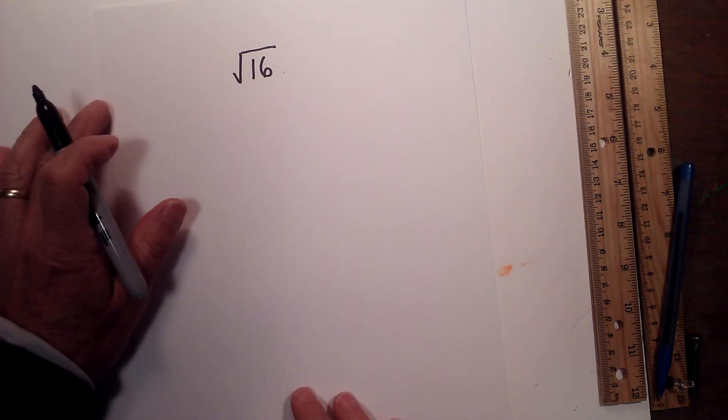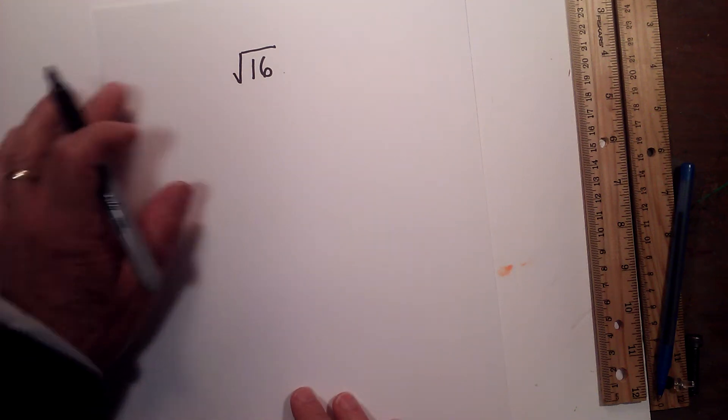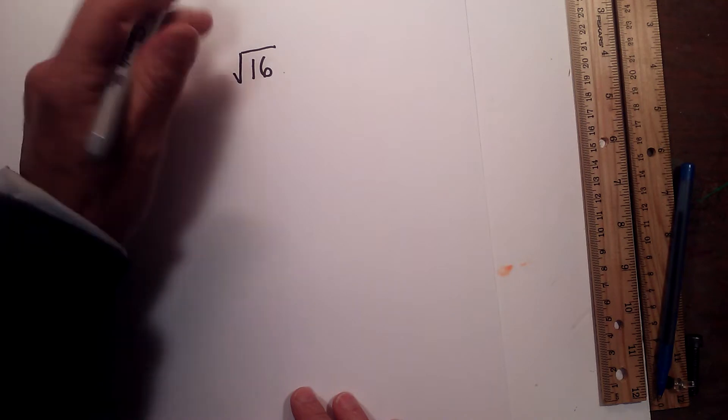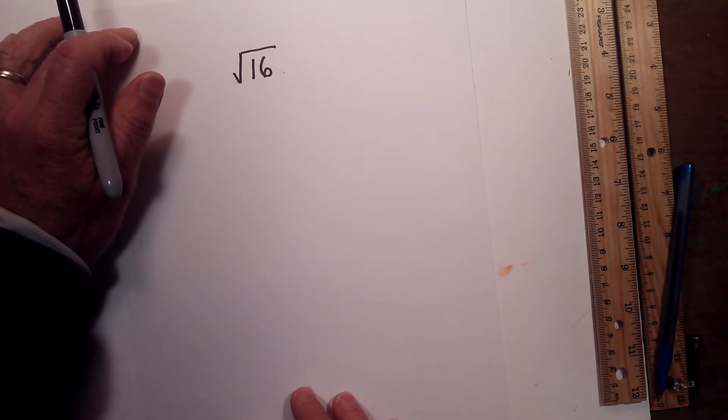Science and using a factor tree in order to find a square root. So let's get started with the square root of 16. So let's first create a factor tree.